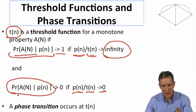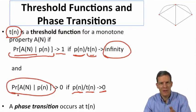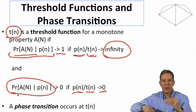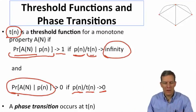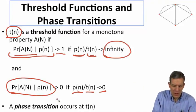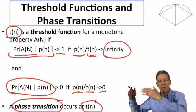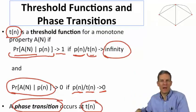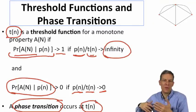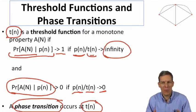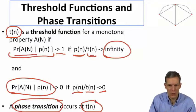The idea here is we'll identify some level of probability that links have to form with — if you're above that, the property holds, and if you're below that, the property doesn't. That's a threshold function, and we'll say that a phase transition occurs at this threshold, meaning that if your probability is above that, you're getting the property; if not, you don't. So the network structure is either satisfying or not satisfying that property as you cross those thresholds.